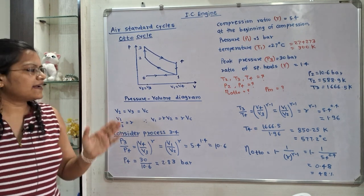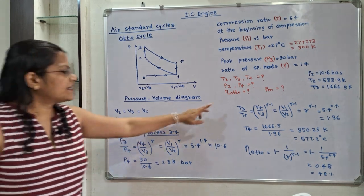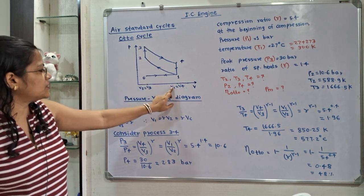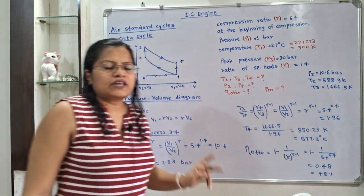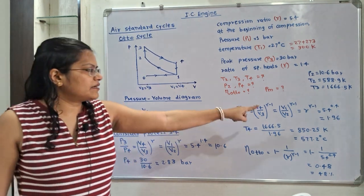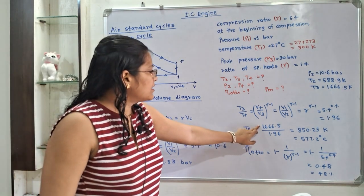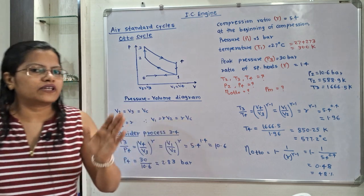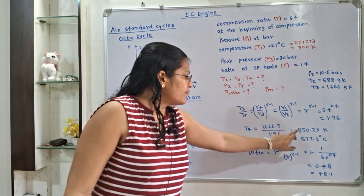To find the temperature at point 4, we use T3/T4 = (V4/V3)^(γ−1) = R^(γ−1) = 5.4^0.4 = 1.96. Taking T3 = 1666.5 Kelvin, T4 = 1666.5/1.96 = 850.25 Kelvin, which converts to 577.2 degrees Celsius.